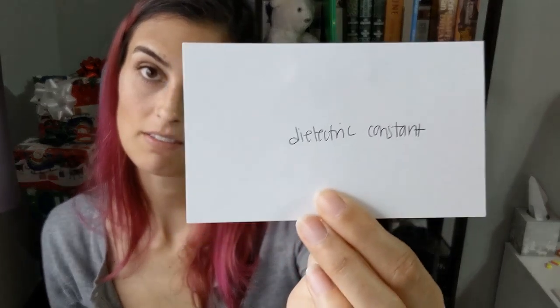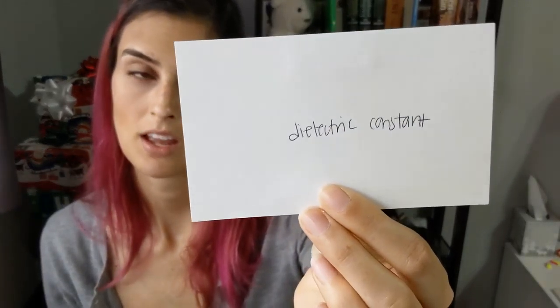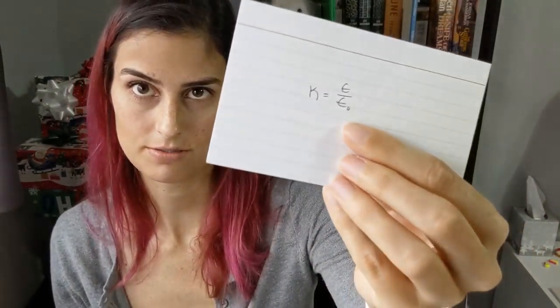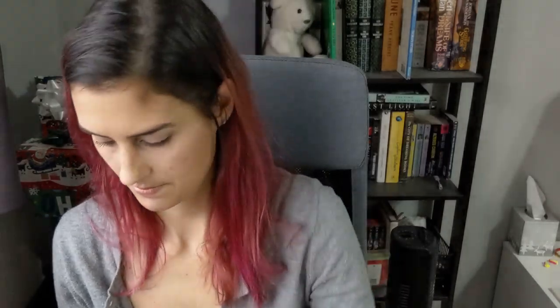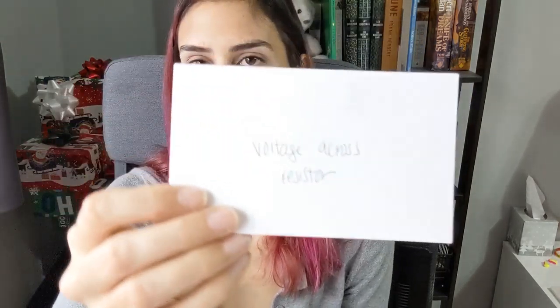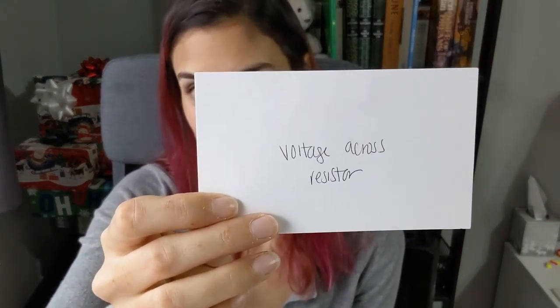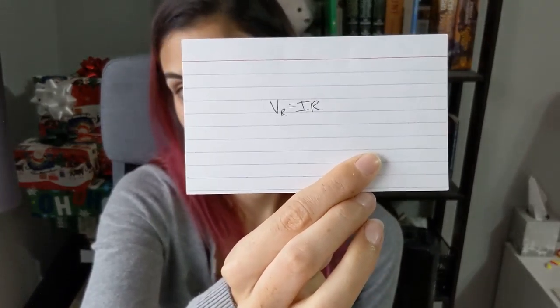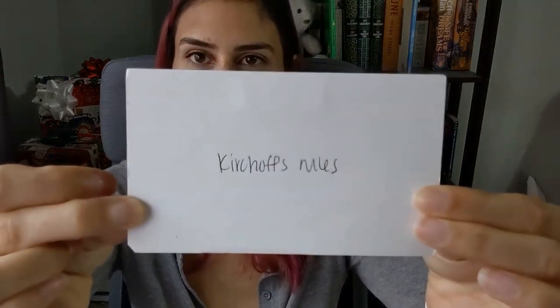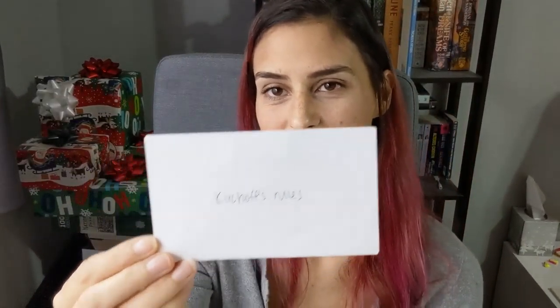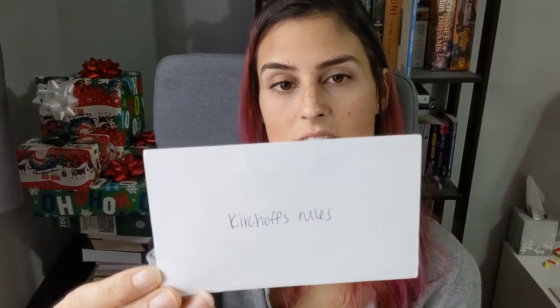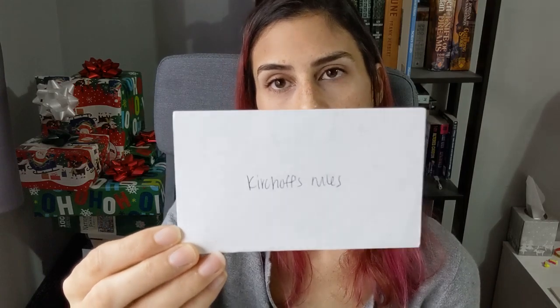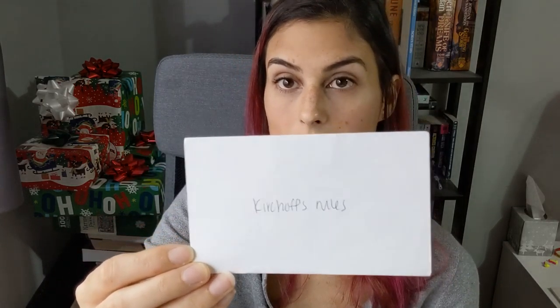The dielectric constant of a substance: capital K equals epsilon divided by epsilon naught, where epsilon naught is free space and epsilon is in the substance. Voltage across a resistor: V equals IR. Kirchhoff's rules: the sum of currents into a node always equals zero, and the sum of voltages around a closed loop always equals zero.